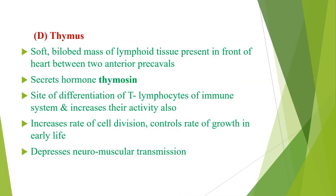Next gland is the thymus — a soft bilobed mass of lymphoid tissue present in front of the heart, between the two anterior pre-cavials. The thymus gland secretes the hormone thymocin. Its functions are: it is the site of differentiation of T lymphocytes of the immune system, so thymocin increases the activity of T lymphocytes. It also increases the rate of cell division, controls the rate of growth in early life, and depresses neuromuscular transmission.